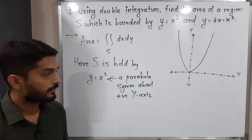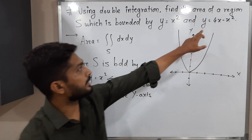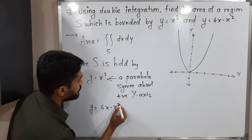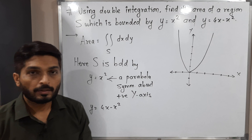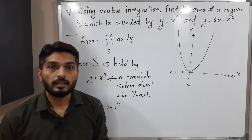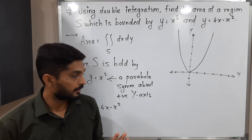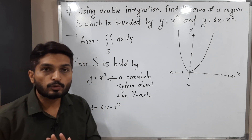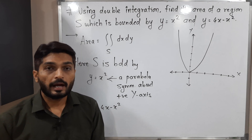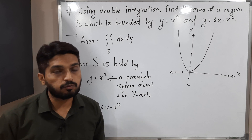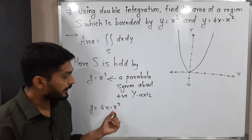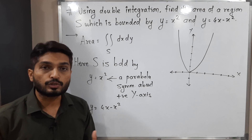Now let us consider the second equation: y equals 4x minus x squared. The highest power of y is one and the highest power of x is two, so again it is a parabola. But this is not a standard parabola since we have the complicated term 4x minus x squared. Let us try to express it in standard form. The x squared term should not be negative.